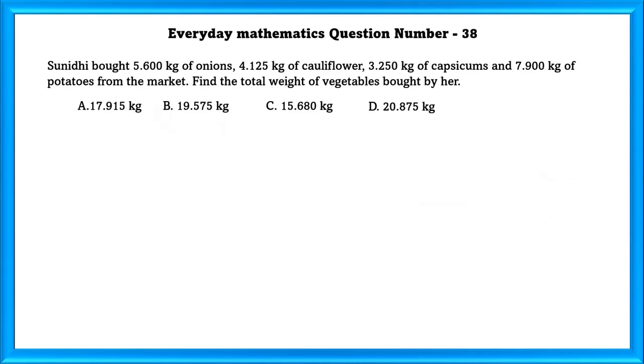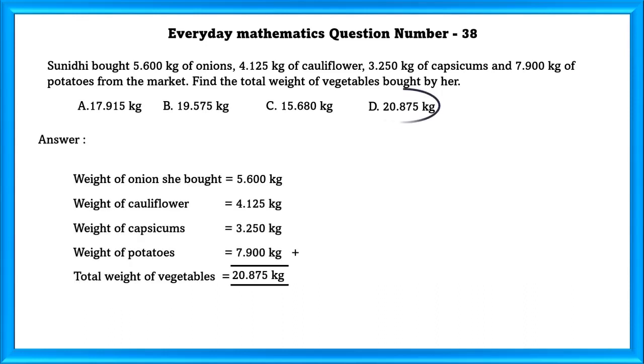Everyday Mathematics question number 38. Saniti bought 5.6 kg of onion, 4.125 kg of cauliflower, 3.25 kg of capsicum and 7.9 kg of potatoes from the market. Find the total weight of vegetables bought by her. Adding this, we will get 20.875 kg.